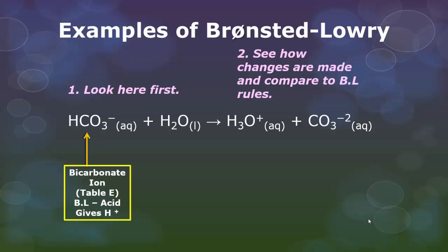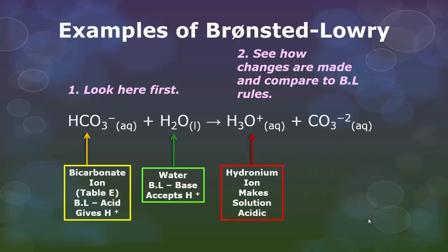We're noticing that our bicarbonate ion, which is found on table E, is going to be giving up a hydrogen ion. You'll notice that because you have CO3 minus 2 all the way in the far right-hand side. It lost that hydrogen ion. The H2O is going to be the Bronsted-Lowry base because it is accepting the hydrogen ion. Thus your hydronium ion making the entire solution acidic and your carbonate ion which is again found on table E. So all we're doing guys is identifying who is giving up a hydrogen ion and who is accepting that hydrogen ion. That is all we need to do for the Bronsted-Lowry theory. And then the solution is considered acidic or basic depending on the products.